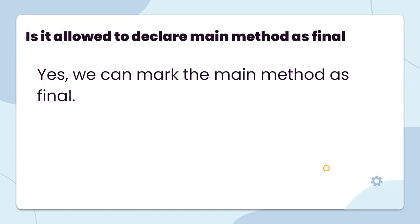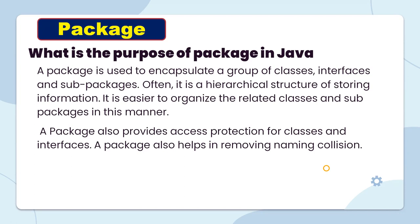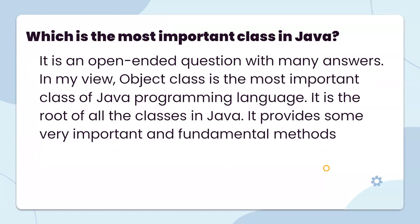Is it allowed to declare the main method as final? Yes, we can make the main method final. Next topic is packages. What is the purpose of a package in Java? A package is used to encapsulate a group of classes, interfaces, and sub-packages. It is a hierarchical structure for storing information. It makes it easier to organize related classes and sub-classes. A package also provides access protection for classes and interfaces, and helps in removing naming conflicts.